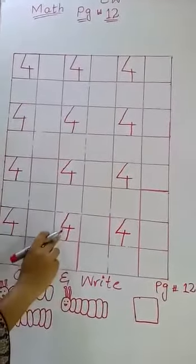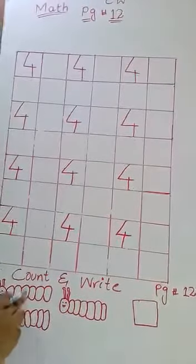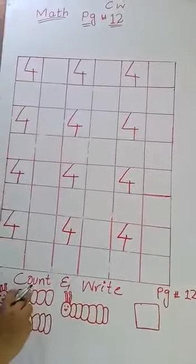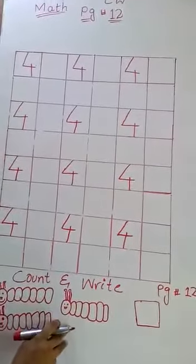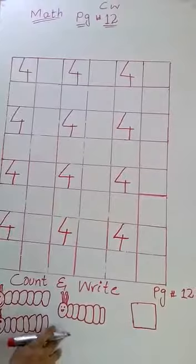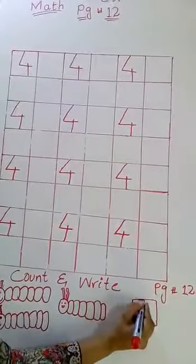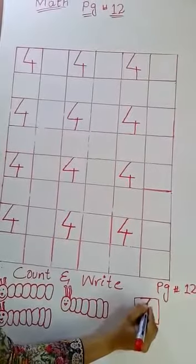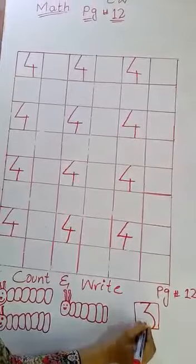Here caterpillar: count and write. You have to count and then write. One, two, three. How many caterpillars are there? Three. One, two, three. Write three: sleeping line, slanting line, then draw a curve. That makes number three.